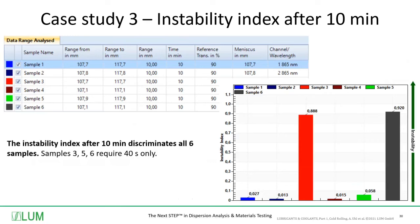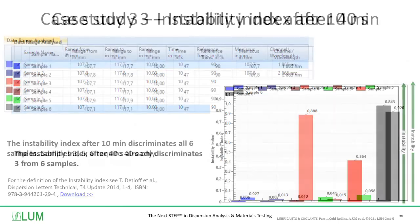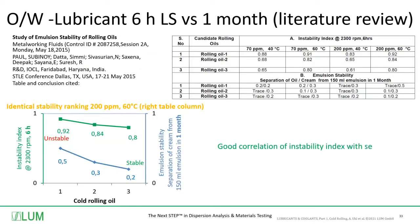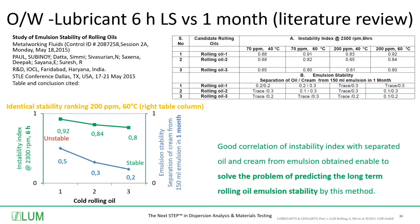After 10 minutes, we are able to discriminate all 6 samples. We can also see that only 40 seconds are needed for samples 3, 5, and 6 — same ranking: most unstable sample 6, second most unstable sample 3, third sample 5. Samples 1, 2, and 4 are close to each other, so we recommend running a few minutes longer — 40 seconds for the first three, 10 minutes for all six. The authors conclude there is a good correlation of the instability index with the separated oil and cream from emulsion, enabling prediction of long-term rolling oil emulsion stability. Six hours in the LumiSizer versus one month storage in a hot air oven.